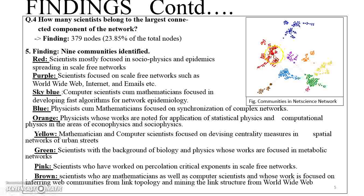The nodes are sized by betweenness centrality and are color-coded: red, blue, purple, orange, yellow, green, pink, sky blue, and brown. The red community consists of scientists focused on social physics and epidemic spreading in large-scale free networks. The purple community focuses on scale-free networks such as the worldwide web, internet, and emails. The sky blue community consists of scientists and mathematicians focused on developing fast algorithms for network epidemiology. The blue community consists of mathematicians focused on synchronization of complex networks.